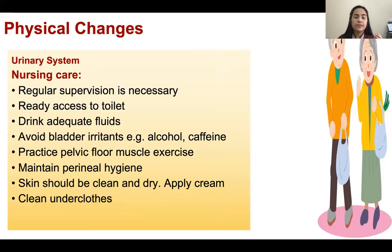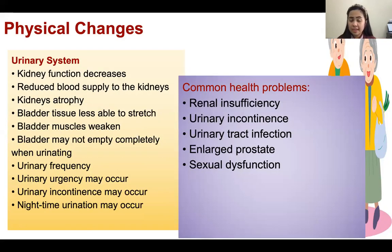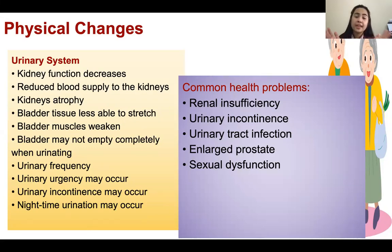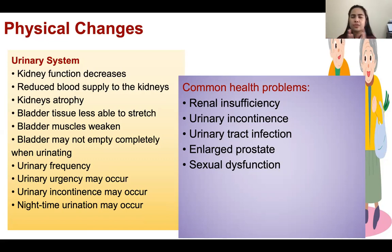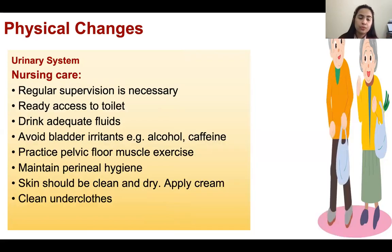For the urinary system, they might have renal insufficiency, urinary incontinence, urinary tract infection, and enlarged prostate, as well as sexual dysfunction. Nursing care includes regular supervision, ready access to the toilet, drink adequate fluids, avoid bladder irritants like alcohol and caffeine.